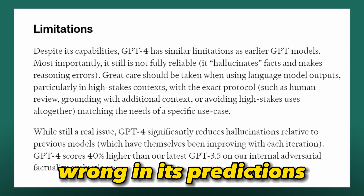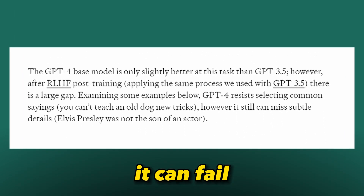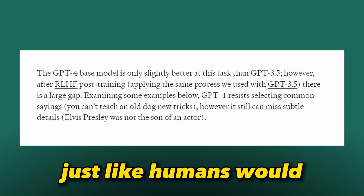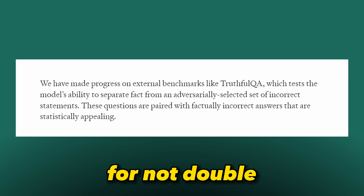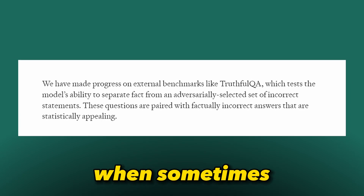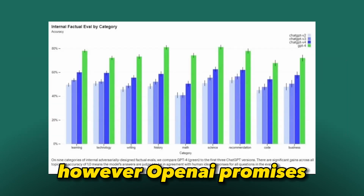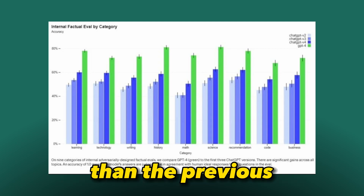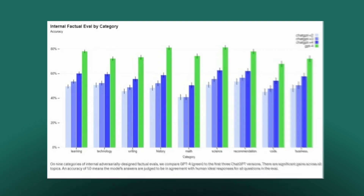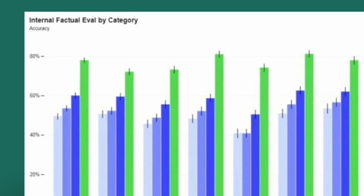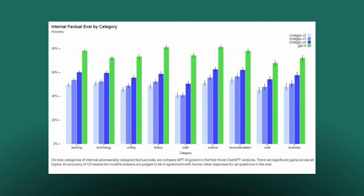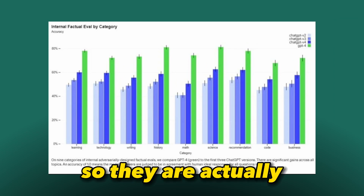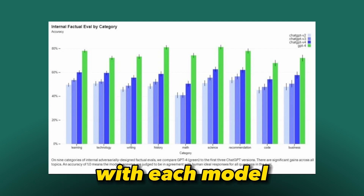Like GPT-3.5, the new model can also hallucinate and be confidently wrong in its predictions. It can fail at problems just like humans would, and may not double-check its work when making a mistake. However, OpenAI promises that GPT-4 has been better trained to avoid this — in their internal adversarial factuality evaluations, the model scored 35% higher compared to GPT-3.5 in reducing hallucinations, so they are getting better with each model.